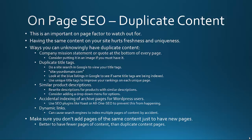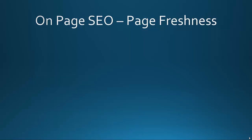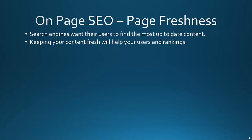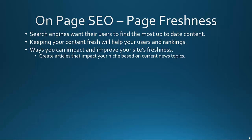Keep in mind: it's all about the quality of your content, not the quantity. Page freshness is another important on-page SEO factor. Search engines want their users to find the most up-to-date content — that's how they're set up. They're there for their users, and you need to be there for your users as well. Keeping your content fresh will help your users and your rankings. Here are multiple ways you can impact and improve your site's freshness.